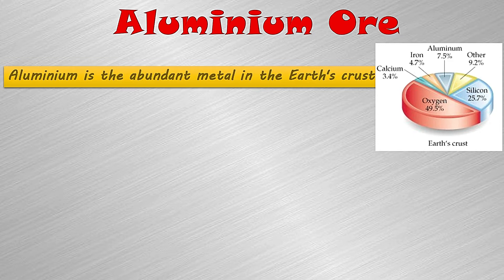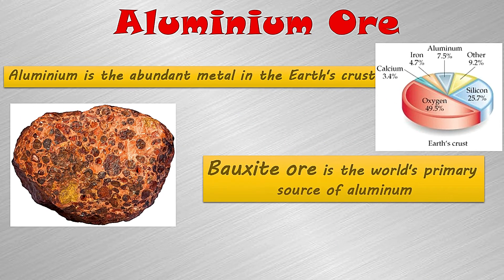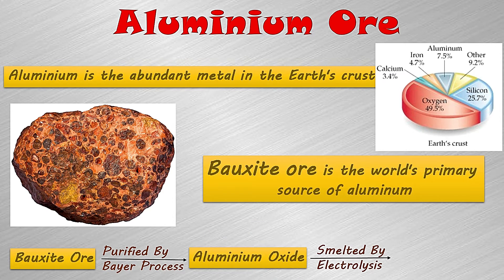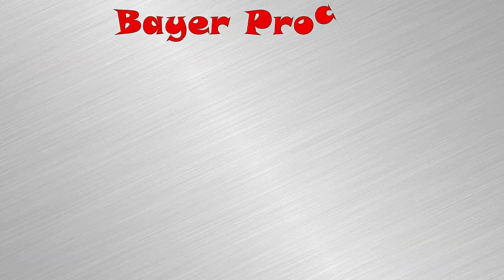Aluminium is the most abundant element in the earth's crust, and bauxite is the most useful ore of aluminium used for extracting aluminium worldwide. In this process, first the bauxite ore is purified by the Bayer process and converted into aluminium oxide, also known as alumina. This alumina is then smelted by electrolysis and converted into pure aluminium.